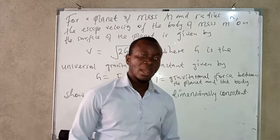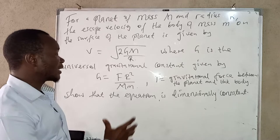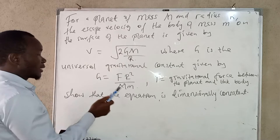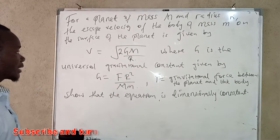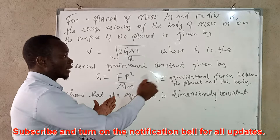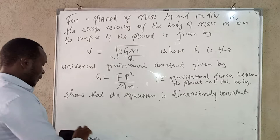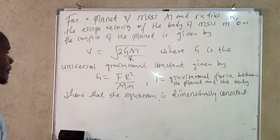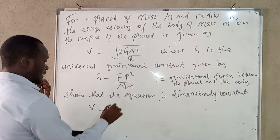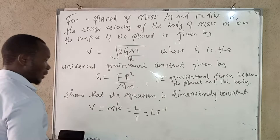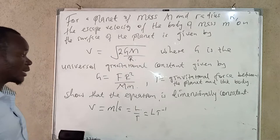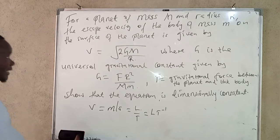This is the equation we're going to handle in this video, where the minimum velocity required for a body to escape the gravitational field of the earth is given by this expression — that is simply the definition of escape velocity. We know that velocity in terms of units is meters per second, and in terms of dimensions it is L over T, which is LT to the power negative one.